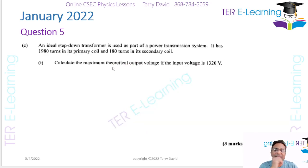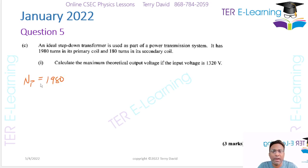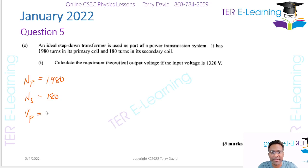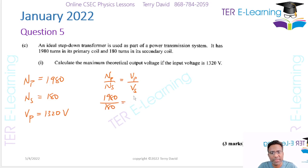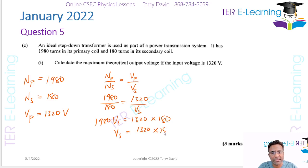Now we have an ideal step-down transformer. The number of turns in the primary is 1980, and the number of turns in the secondary is 180. The maximum theoretical output voltage is what we need to find, given that the input voltage (primary voltage) is 1320 V. We use the transformer equation: Np/Ns = Vp/Vs, so 1980/180 = 1320/Vs. Cross-multiplying gives 1980 × Vs = 1320 × 180.